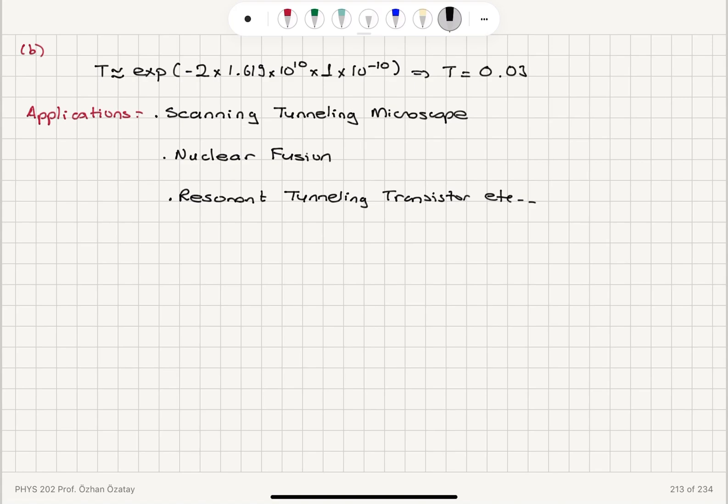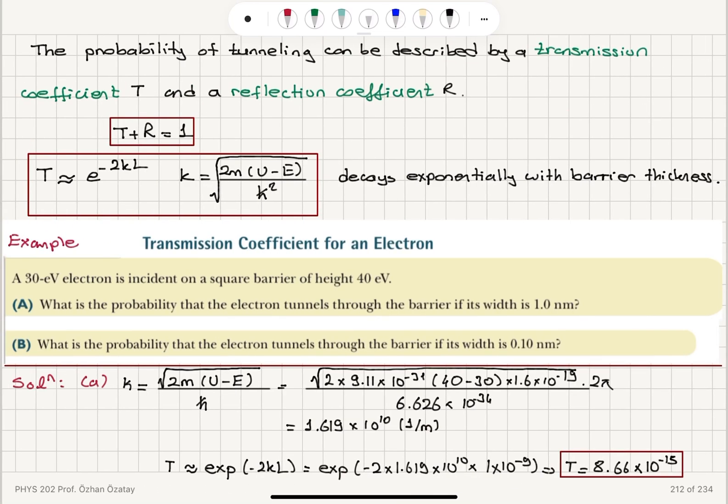This gives us a transmission coefficient of 0.039. You can see it's significantly increased by decreasing the barrier width by a factor of 10. The transmission probability increases from order of magnitude 10 to the minus 14 to 10 to the minus 2. That's a significant increase.